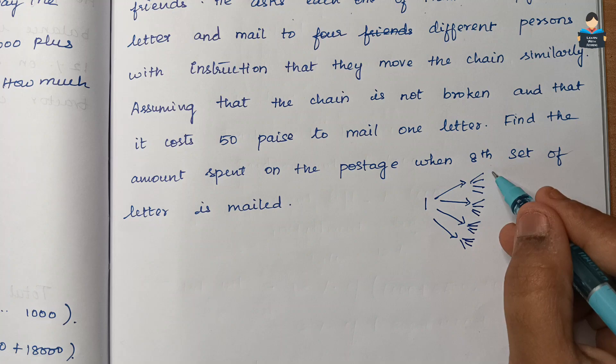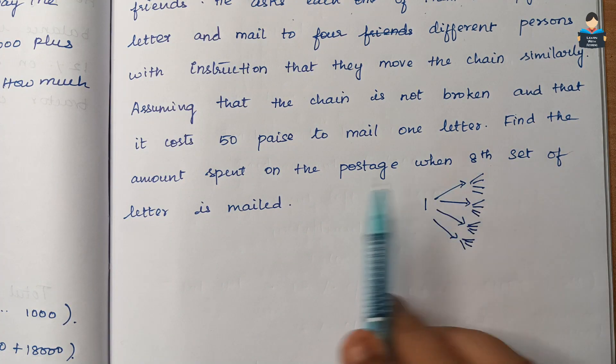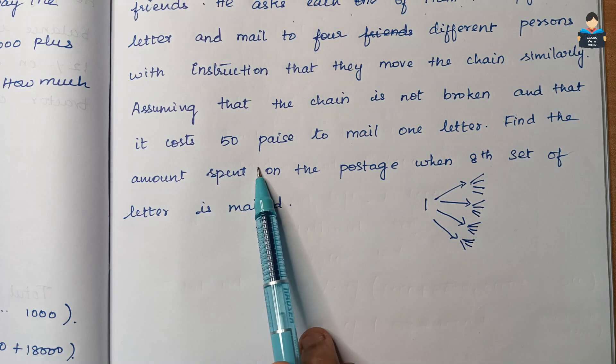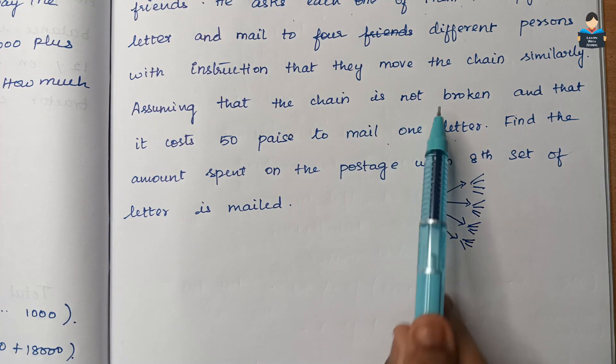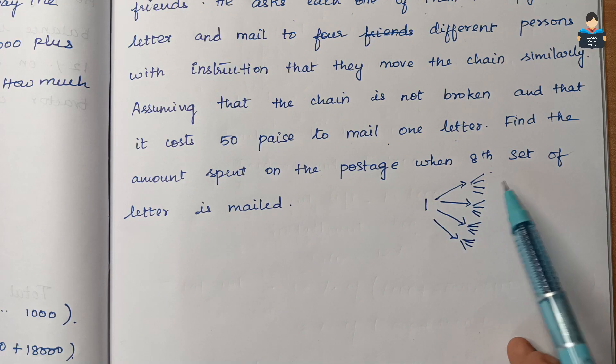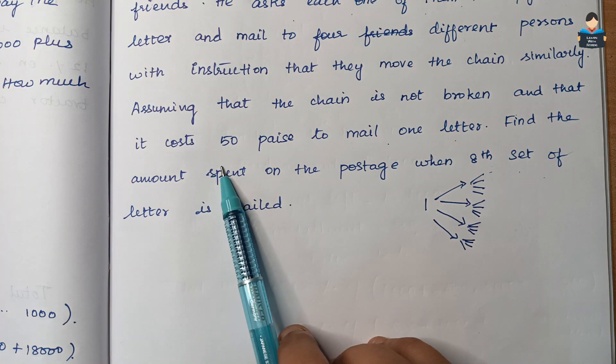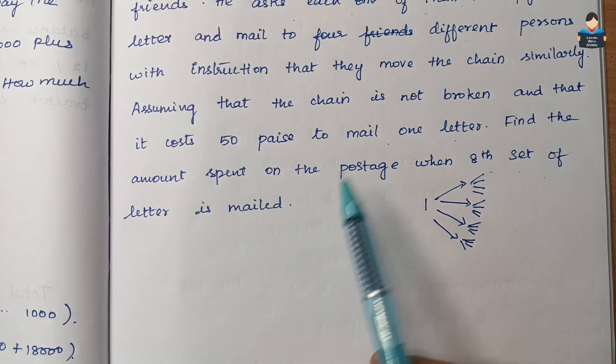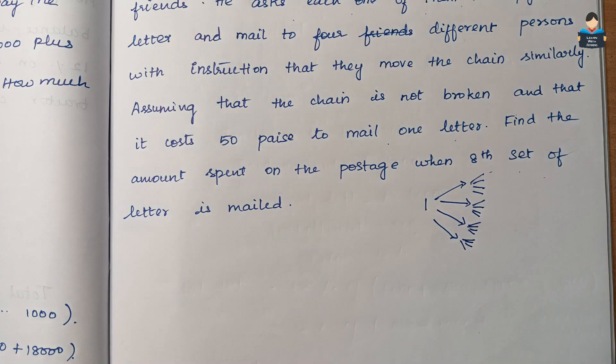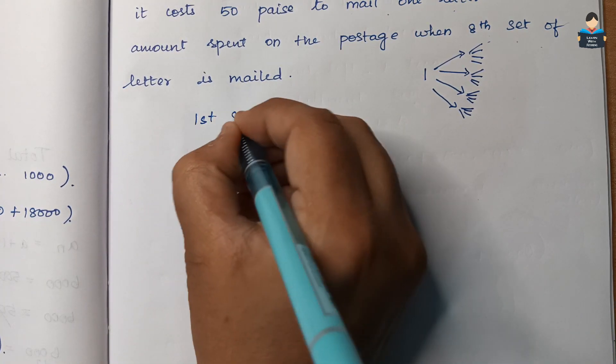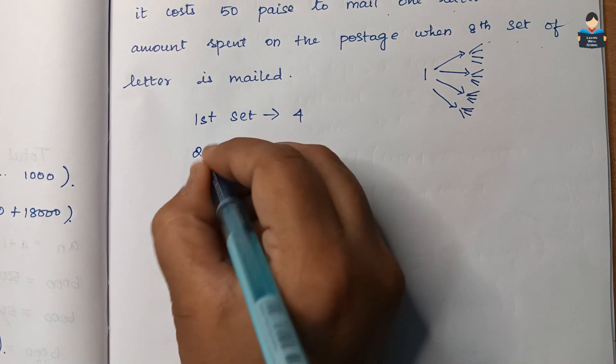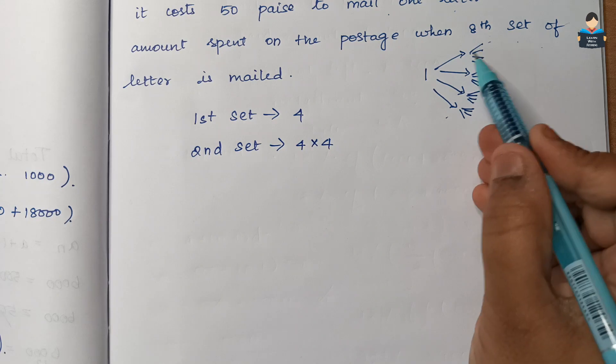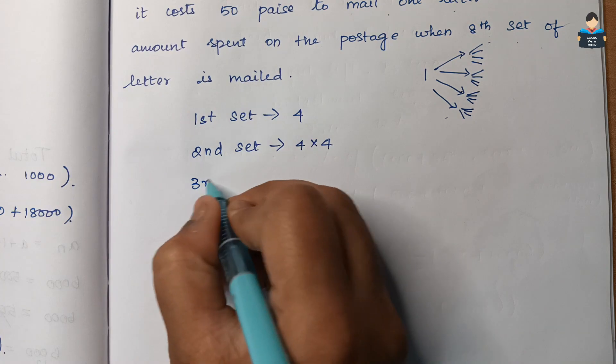The chain continues until the eighth set of letters is mailed. Assuming that the chain is not broken and that it costs 50 paise to mail one letter. So the chain continues to the eighth set. First set is one letter, second set is four into four, that is four persons each mail four letters.